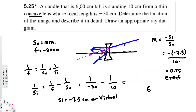To find the height of the image, we multiply the object height of 6 centimeters by the magnification. So height of image = 6 × 0.75 = 4.5 centimeters. To summarize: the image is virtual, erect, and 4.5 centimeters tall. That's how we solve this type of problem — hope you found this helpful, see you next time.